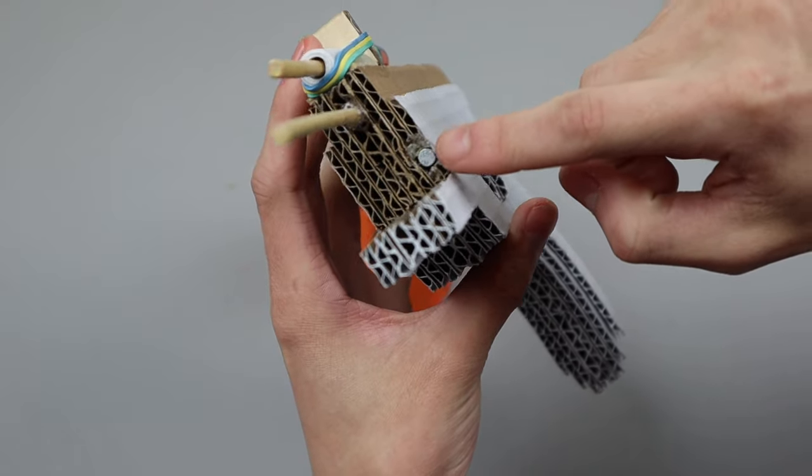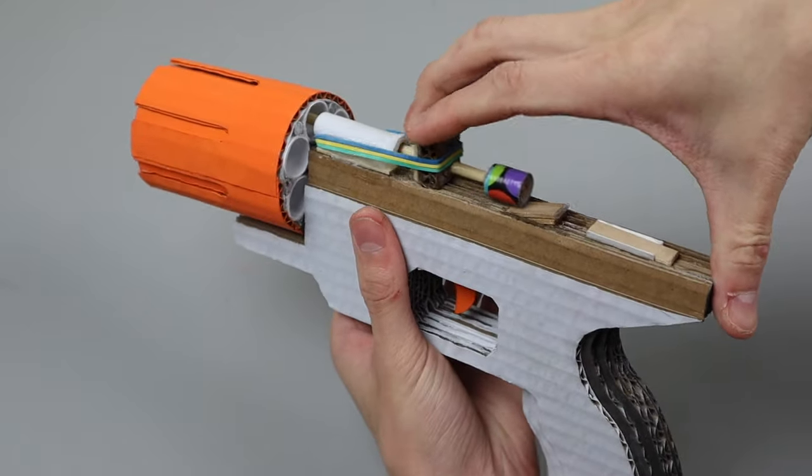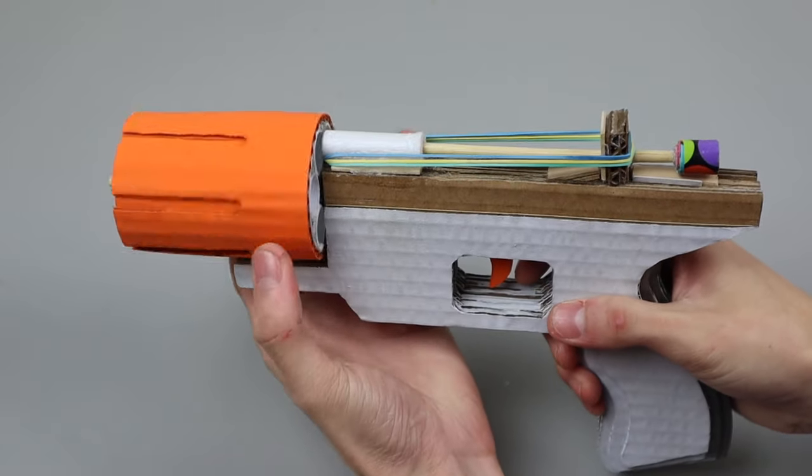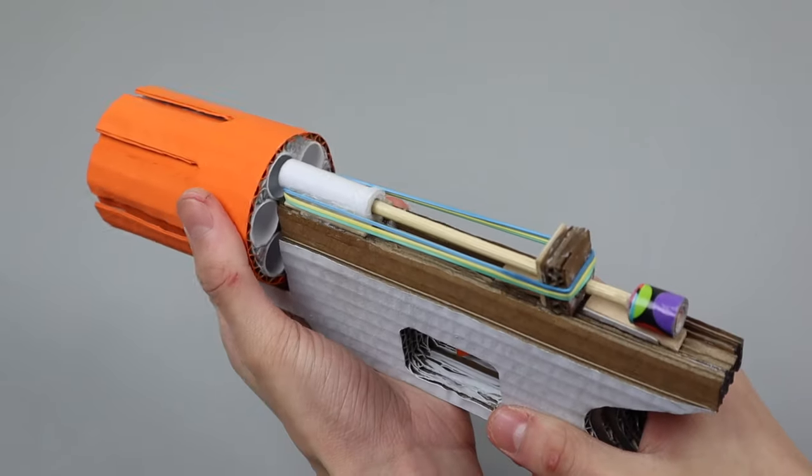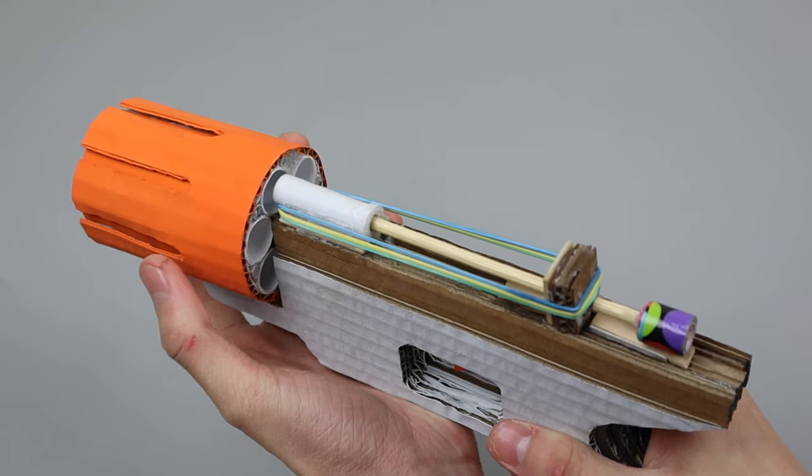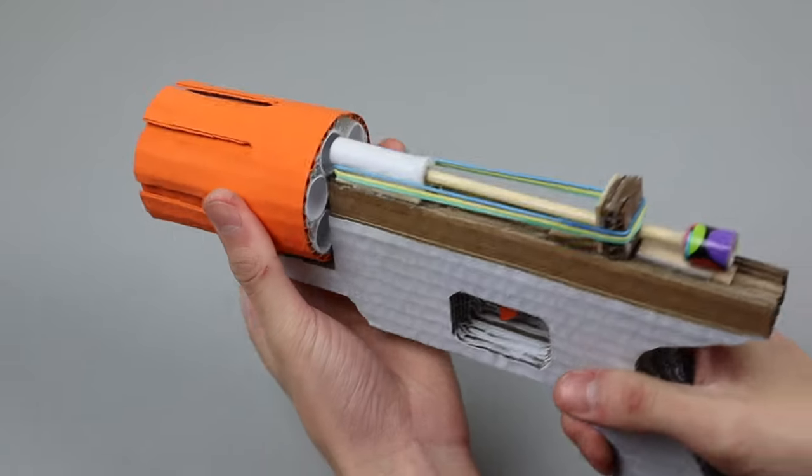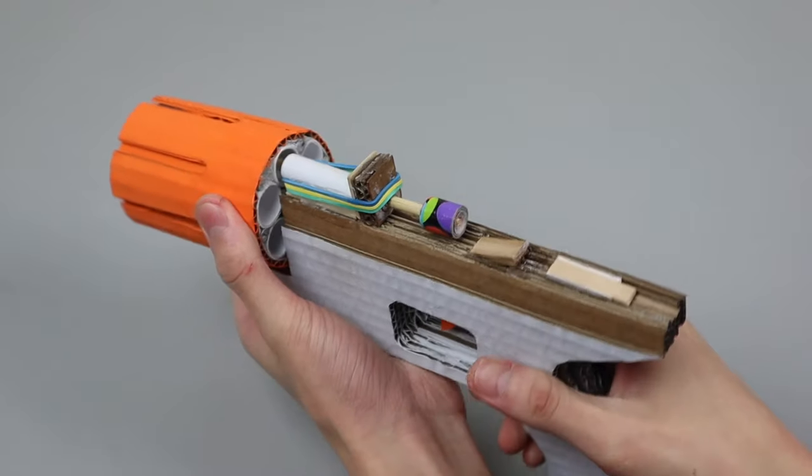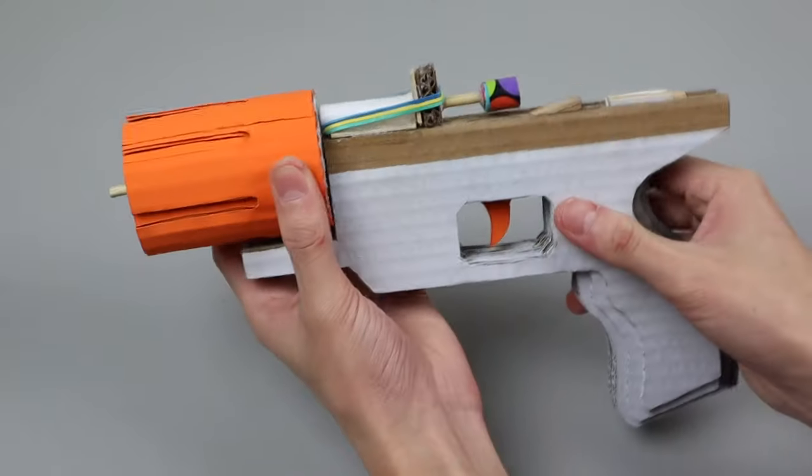The reason I used magnets is these are going to ensure that the barrel always automatically snaps in proper alignment. That way you don't have to worry about perfectly aligning each shot manually yourself, but rather you just twist it and it will quickly snap to the correct position by itself.